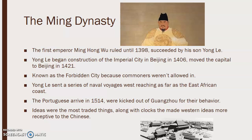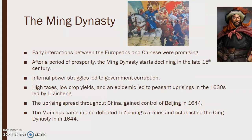Yongle sent a series of naval voyages west, which would reach as far as the East African coast. In 1514, the Portuguese landed in China but were kicked out of Guangzhou for their behavior. Ideas were the most traded things, along with some other stuff like clocks, which made Western ideas more receptive to the Chinese. Early interactions between the Europeans and the Chinese were very promising, and they had a period of prosperity.